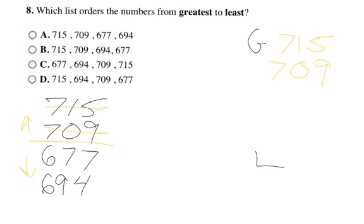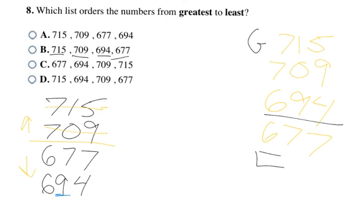Then looking at the 600 numbers — the hundreds column is the same, but the tens column has a 9 and a 7. Nine is bigger than seven, and I'm listing bigger numbers first, so 694 is bigger than 677. Listing all four numbers out: 715, then 709, then 694, then 677 — ordered greatest to least — that's choice B. Thank you for joining us today, and I hope you learned something new!